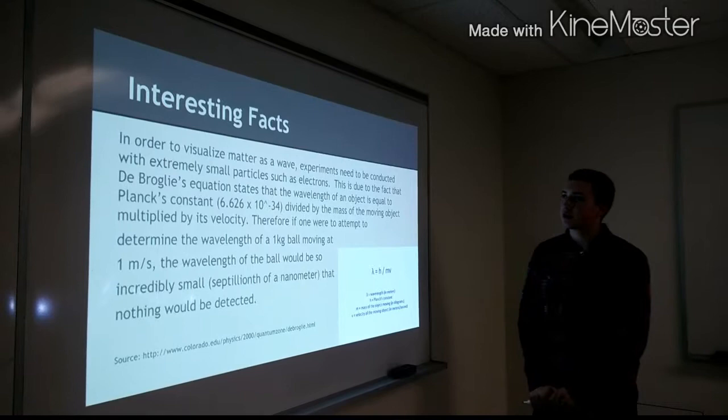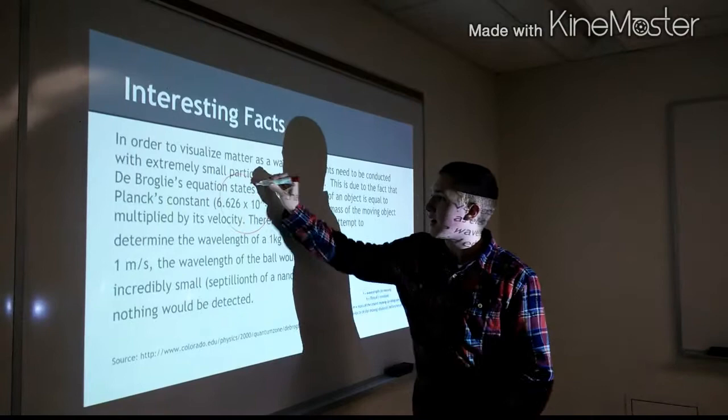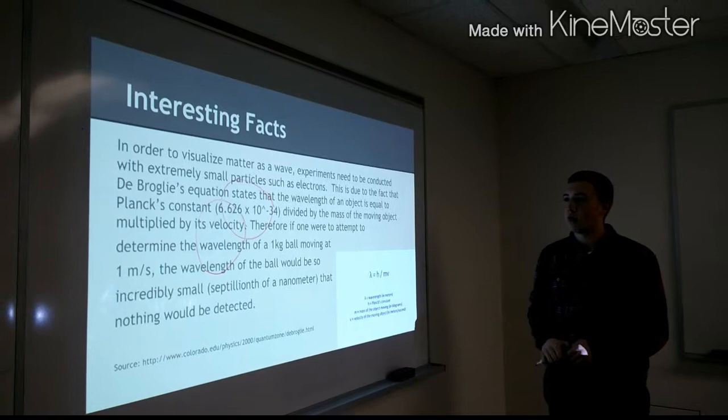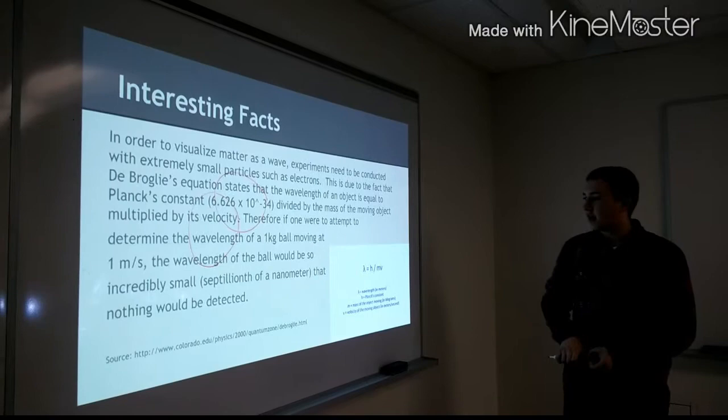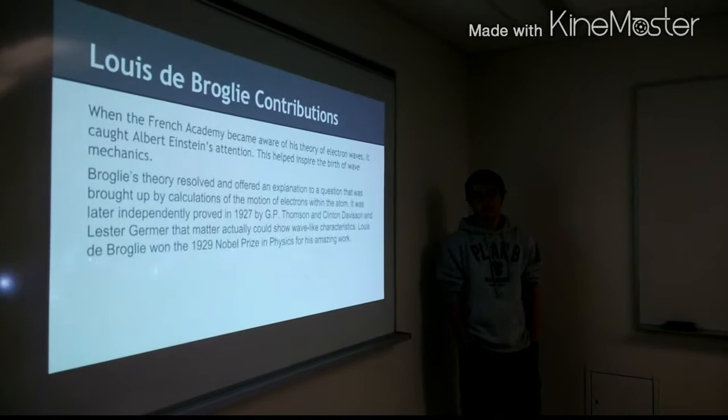Next we have interesting facts. In order to visualize matter as a wave, experiments need to be conducted with very small particles such as electrons. This is due to the fact that De Broglie's equation states that the wavelength of an object is equal to Planck's constant, which is this number right here, that is then divided by the mass of the moving object and multiplied by its velocity. Therefore, if one were to attempt to determine the wavelength of a one kilogram ball moving at one meter per second, the wavelength of the ball would be so incredibly small, a septillionth of a nanometer, that nothing would be detected.